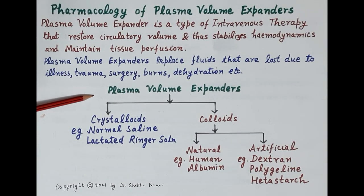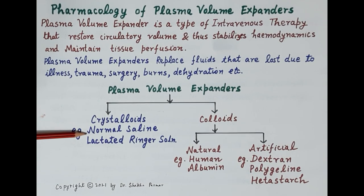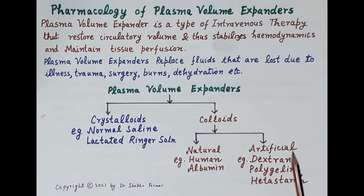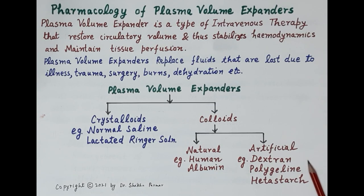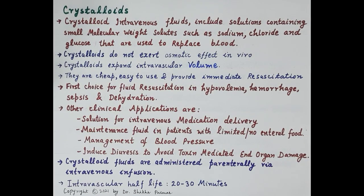Plasma volume expanders are of two types: crystalloids and colloids. The most commonly used crystalloids are normal saline and lactated Ringer's solution. Colloids are of two types — natural and artificial. Natural colloids include human albumin, whereas artificial colloids include plasma volume expanders like dextran, polygeline, and hetastarch.